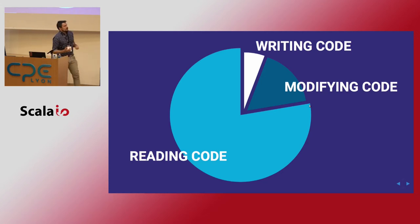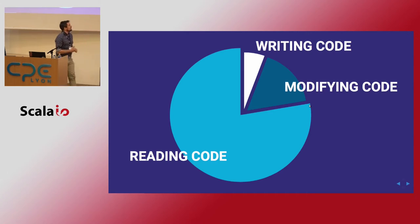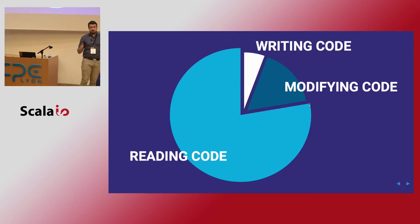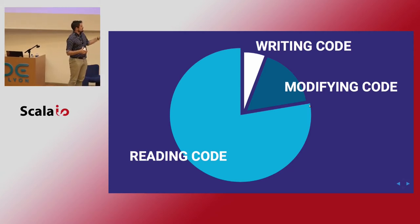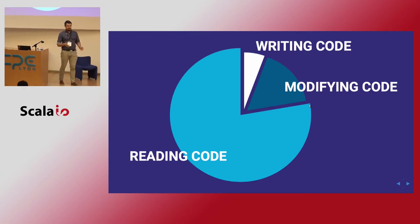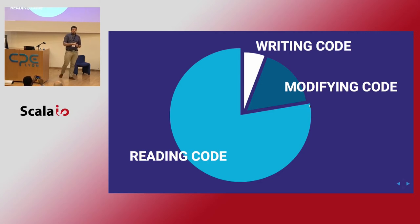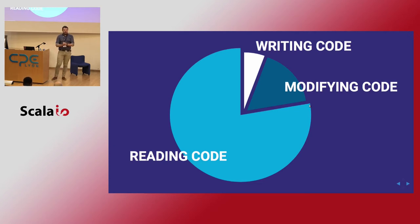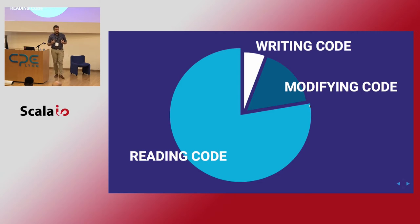When I was learning how to program and when I look at young programmers coming from university, they're always talking about writing the code. But what we do most in our work — at least what studies show — is we are reading the code. On average, it's 70 to 80% of the time spent reading code if the project is quite normal and we're actively developing it. But if you're talking about legacy code — and Scala does have legacy code — it's 90% of the time reading.